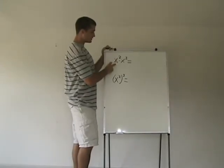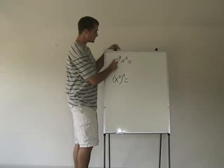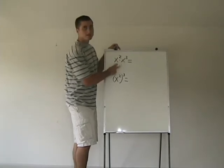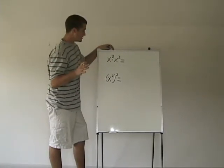When you multiply exponents, you're taking x to the second times x to the third. Remember, you always have to have the same base or you can't do this.